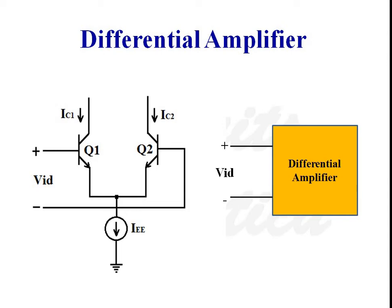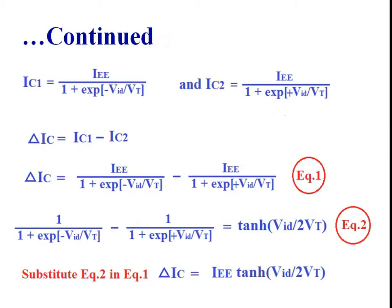Let us consider a differential amplifier which consists of two NPN transistors Q1 and Q2 as shown in the diagram. We can write the expression for collector currents as: IC1 is equal to IEE divided by 1 plus e raised to minus VAD by VT, and IC2 is equal to IEE divided by 1 plus e raised to plus VAD by VT.